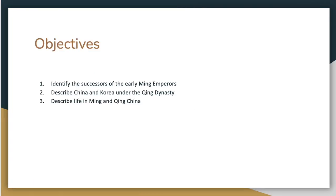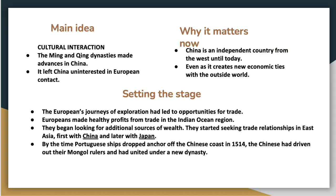Before we start, be sure of the objectives. Number one: identify the successors of the early Ming emperors — this will introduce the Ming dynasty. Number two: describe China and Korea under the Qing dynasty, another royal family. And describe life in the Ming and Qing. The main idea is that the Ming and Qing dynasties made significant advances in China during the period of European exploration and expansion.